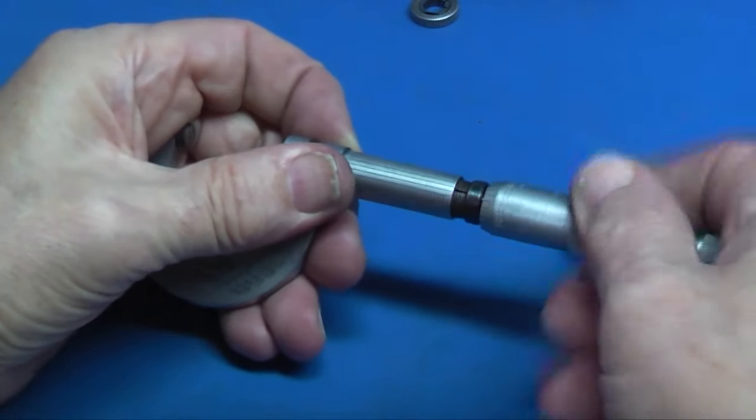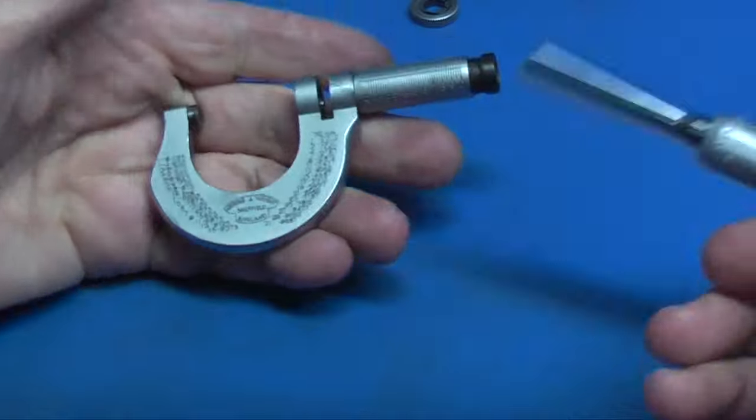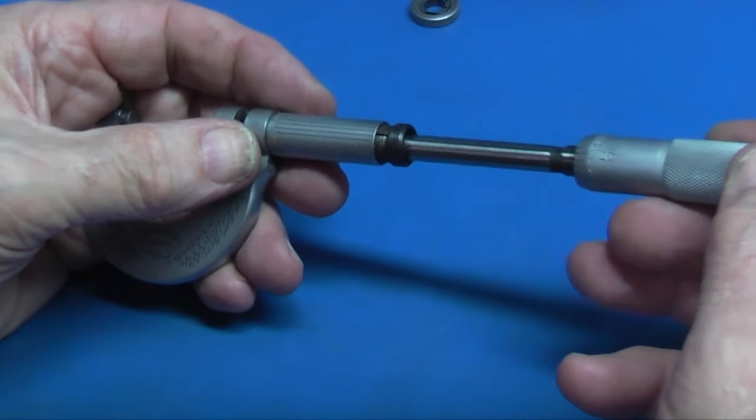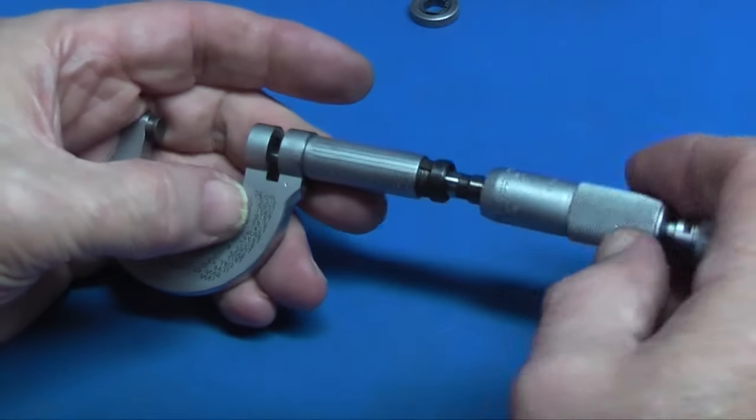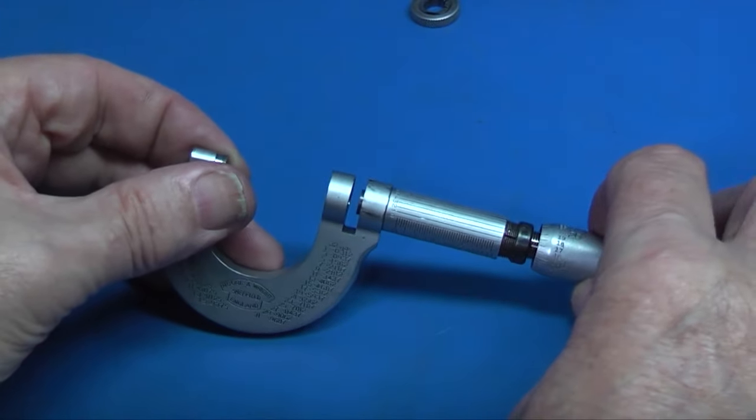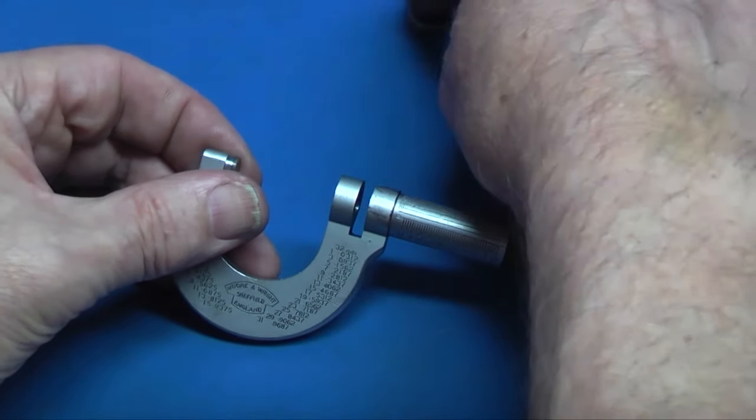So the micrometer comes apart like that. That fits in there, then you have to get the locking ring.